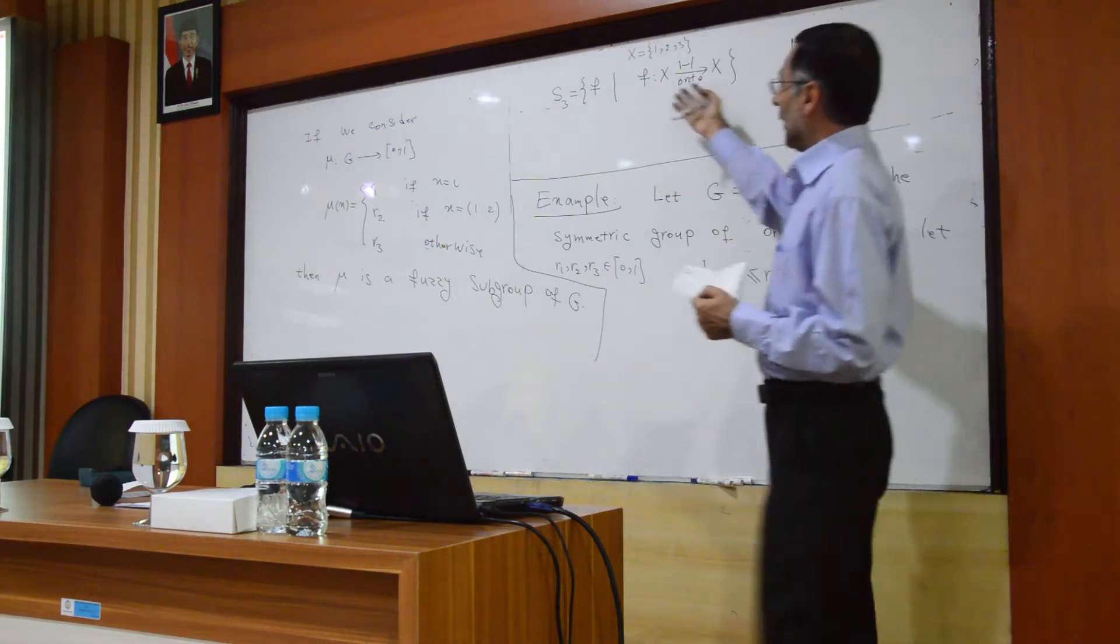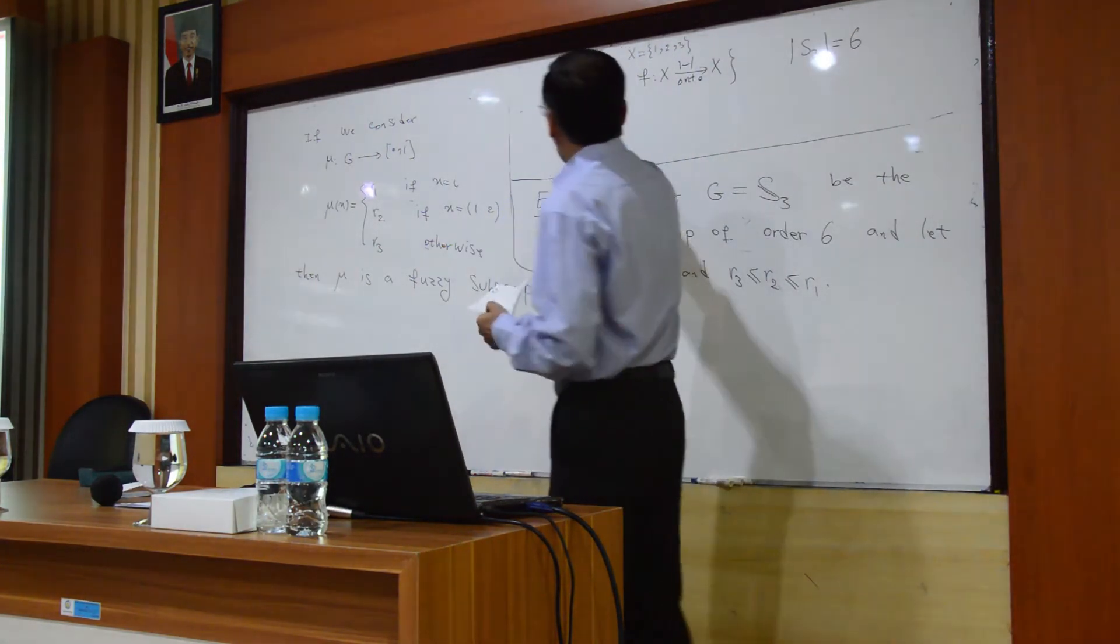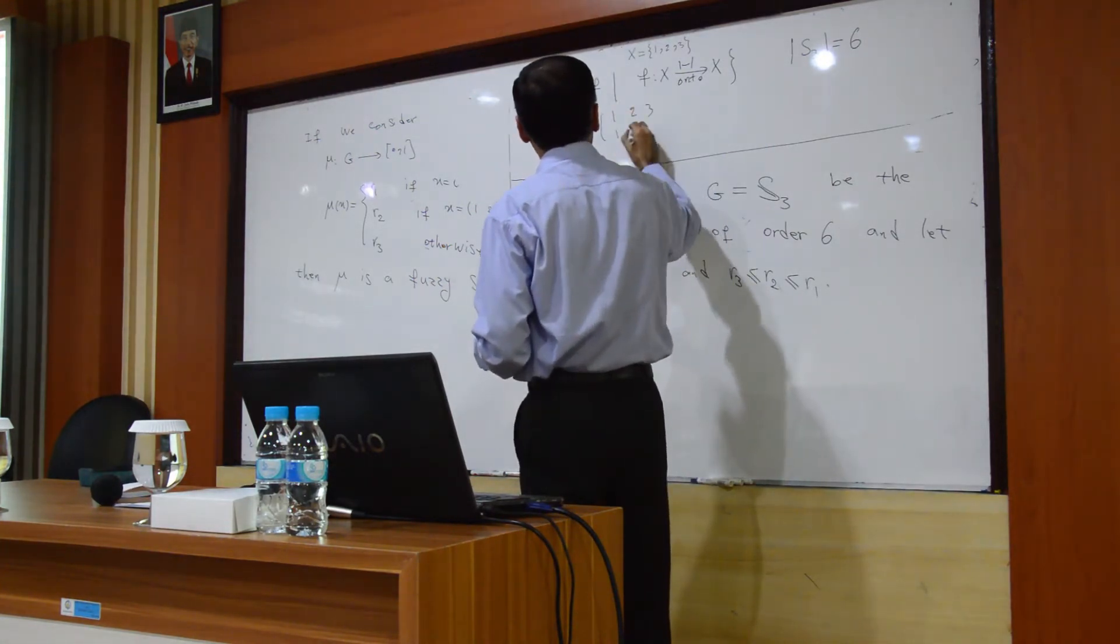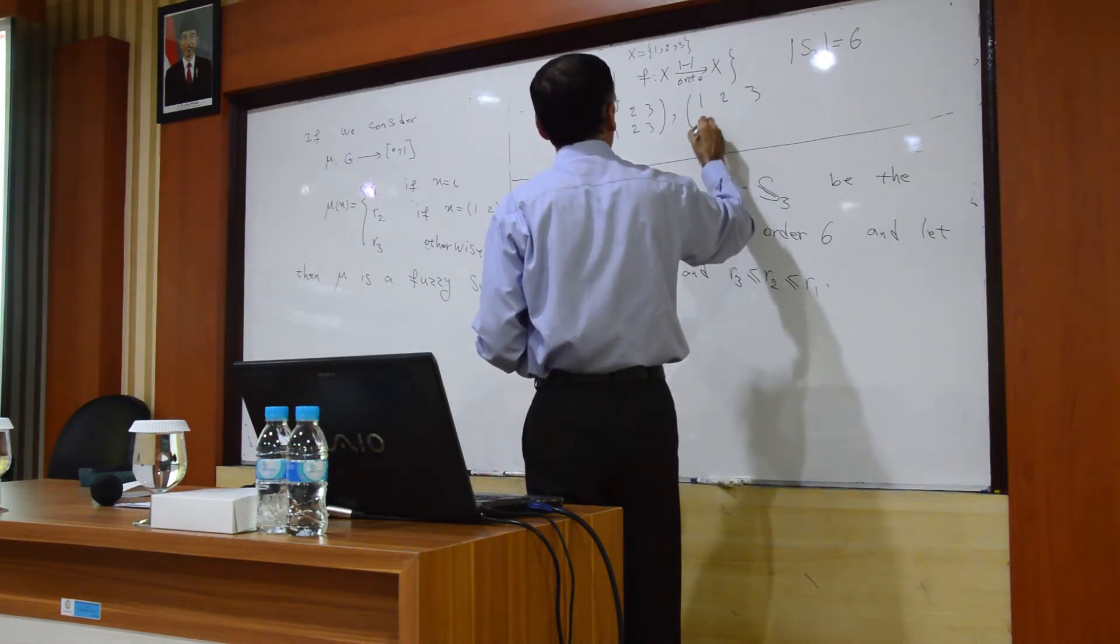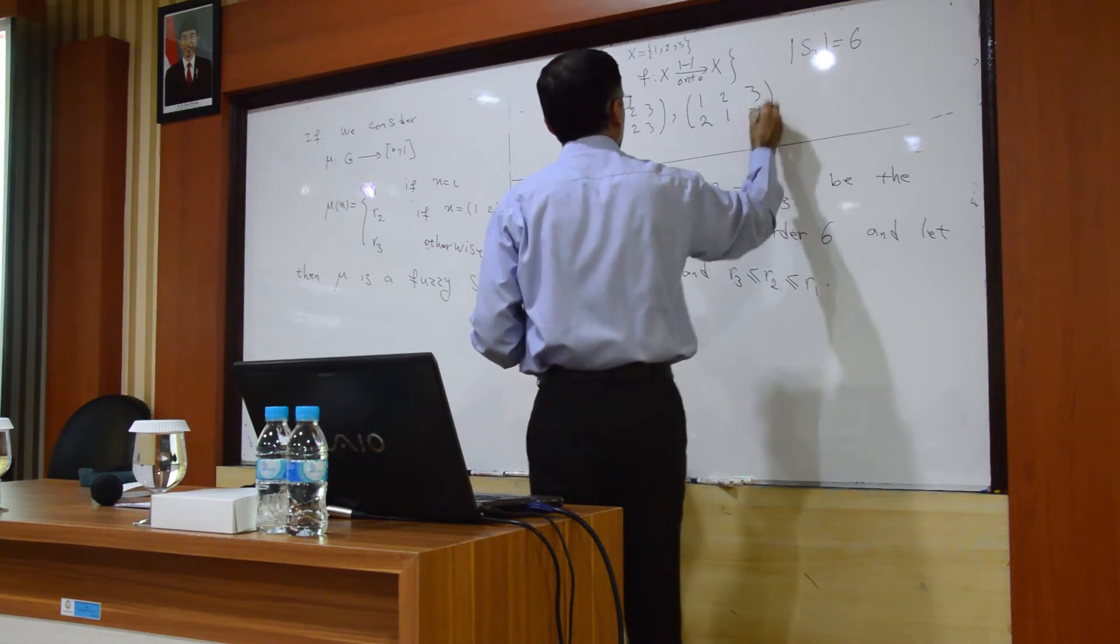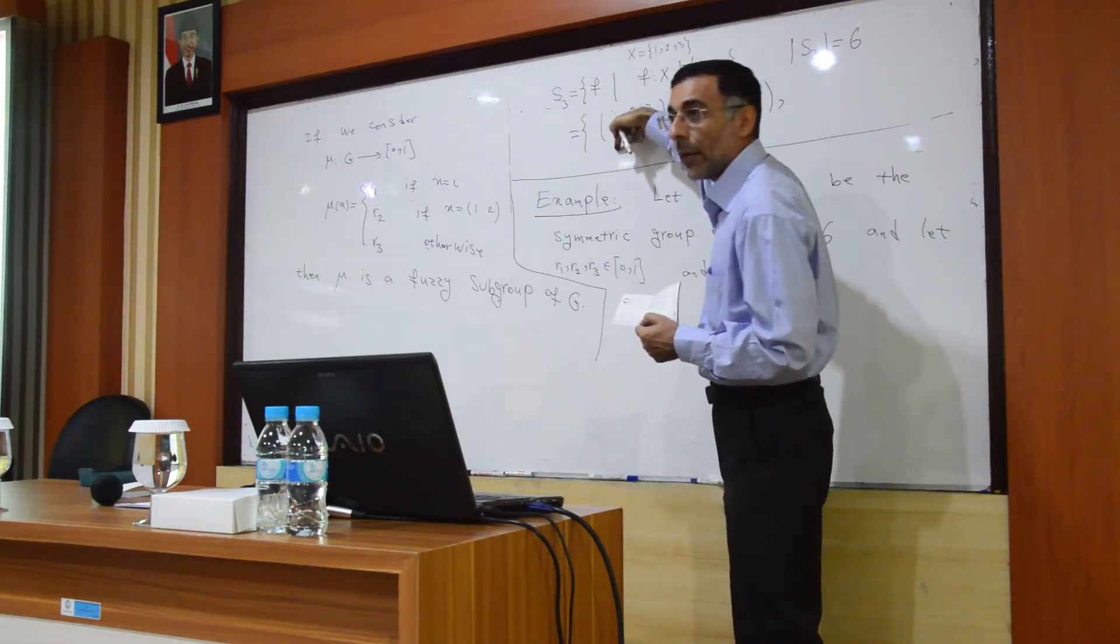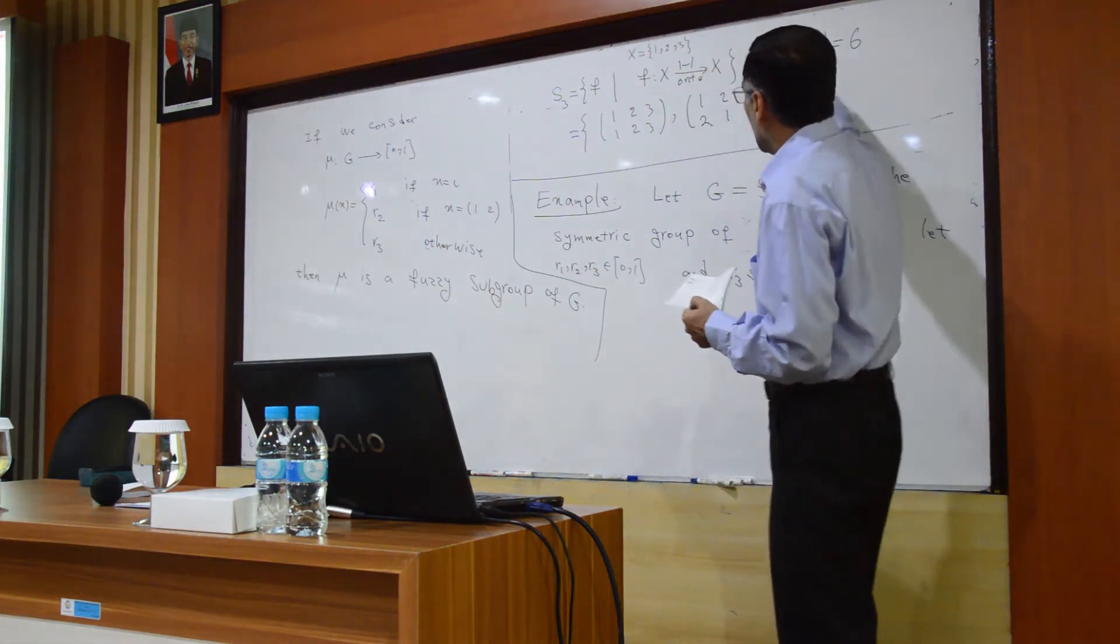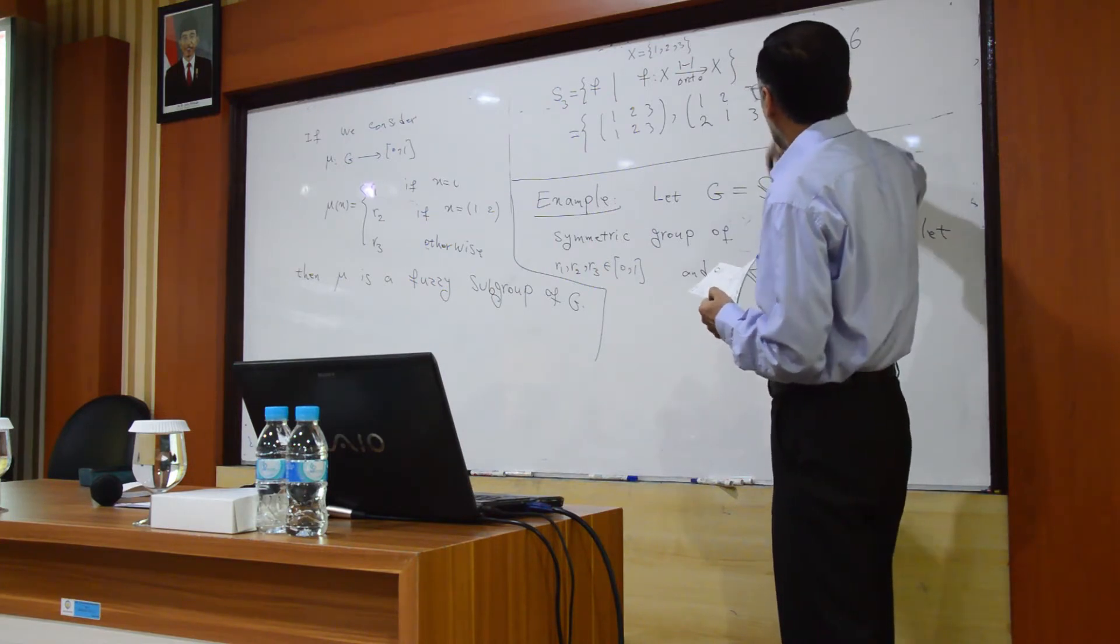Usually in algebra, we show the elements of these sets like this: 1, 2, 3 over 1, 2, 3. This means that 1 goes to 1, 2 goes to 1, 3 goes to 3, 1 goes to 2, 2 goes to 1, 3 goes to 3, and other elements.